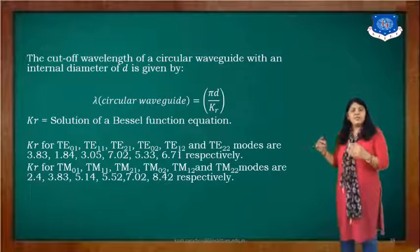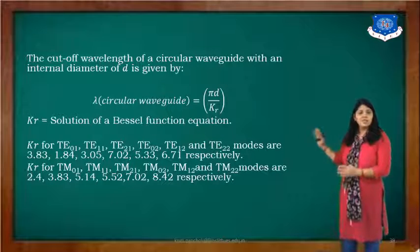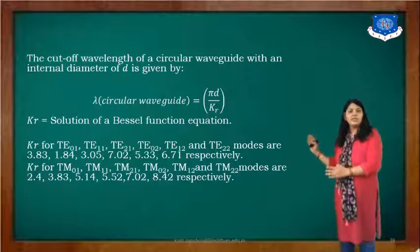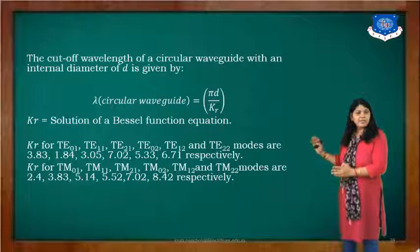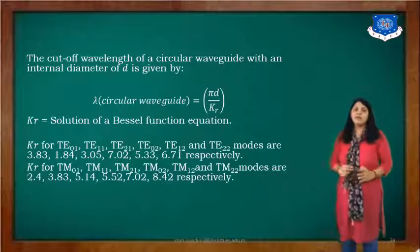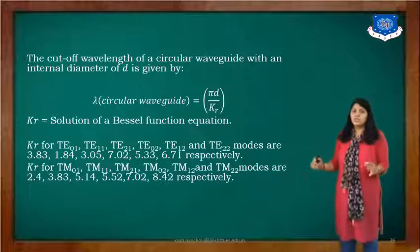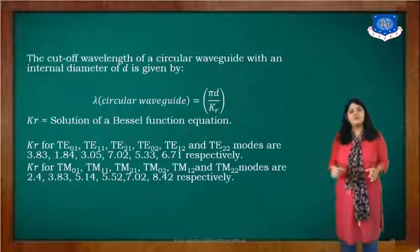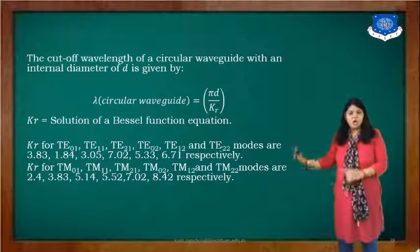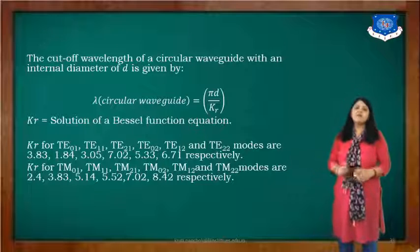There are various values of kr for various modes. The kr values for TE01, TE11, TE21, TE02, TE12, and TE22 modes are 3.83, 1.84, 3.05, 12.02, and 6.71 respectively. These are the values we need to consider according to the type of waveguide used. Similarly, kr values for TM modes are also given and you can select the appropriate kr value according to the TM mode.